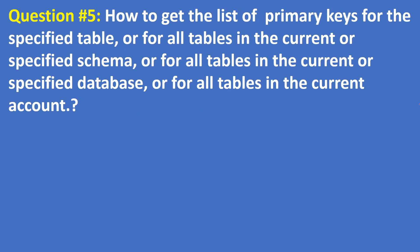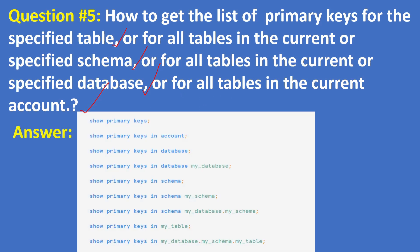Next question: how to get the list of primary keys for a specified table, or for all tables in the current or specified schema, or for all tables in the current or specified database, or for all tables in the current account? The answer is: by using SHOW PRIMARY KEYS, you can get the primary key columns list along with the column name and table name at the account, database, schema, or table level.